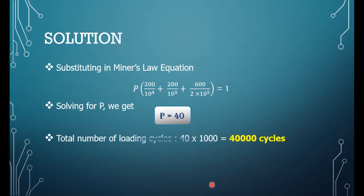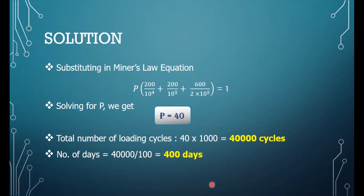Once p is solved, we need to find the number of days, not the number of sequences. We convert: 1000 cycles are applied in one sequence, so 40 sequences gives 40,000 cycles total. Since 100 cycles are provided each day, dividing 40,000 by 100 gives 400 days. This was a simple demonstration of how to find the fatigue life of a component.